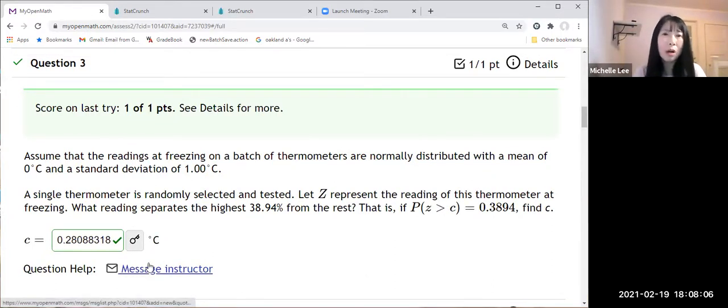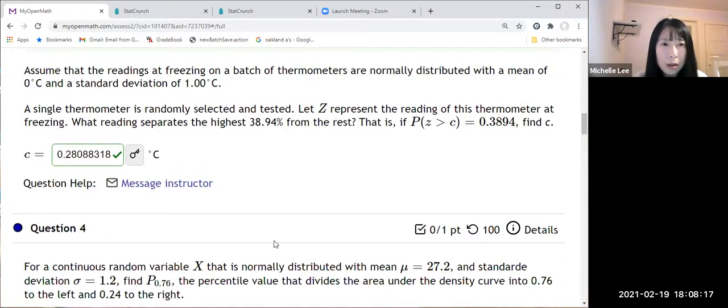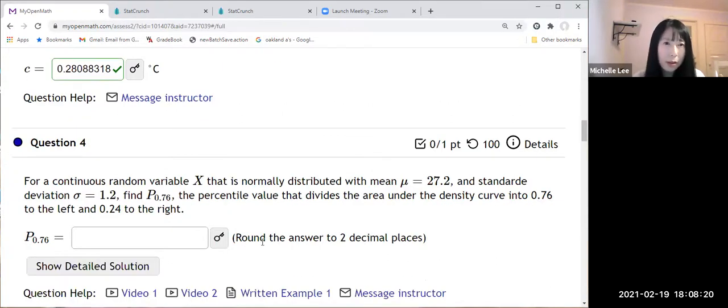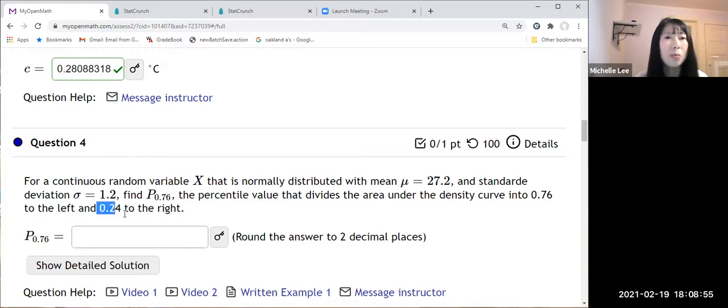Because they don't say anything about how many decimal places they want, so I just show this one. Alright, so next question is about this. For a continuous random variable X that is normally distributed with mean mu equal to 27.2 and standard deviation sigma equal to 1.2, find P_0.76, the percentile value that divides the area under the density curve into 0.76 to the left and 1 minus 0.67, then we get the right side is 0.24.